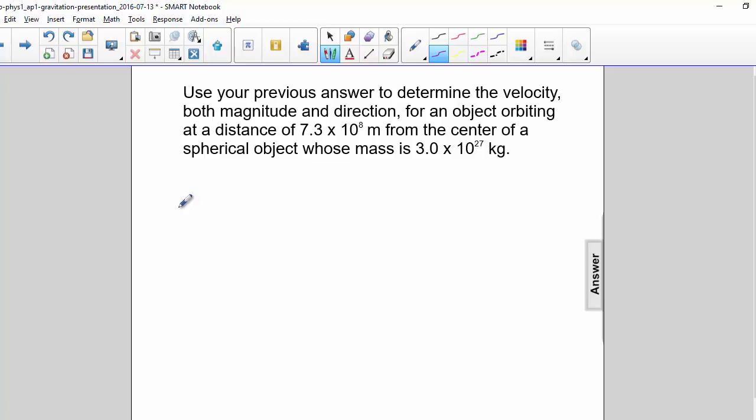Use your previous answer to determine the velocity, both magnitude and direction, for an object orbiting at a distance of 7.3 times 10 to the 8th meters from the center of a spherical object whose mass is 3 times 10 to the 27th kilograms.